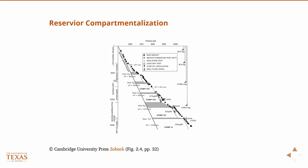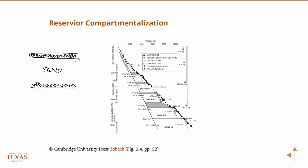Now we're talking about compartmentalization. What I mean by compartmentalization is areas that are highly connected, separated by areas of impermeability. A good example would be sand and shale — layers of shale, which are basically impermeable, alternating with areas of sand, which are highly connected. Where you get hydrostatic pore pressures are in areas of high connectivity or high permeability, where pores are highly connected and you get roughly uniform hydrostatic pore pressures.